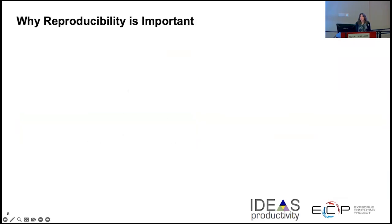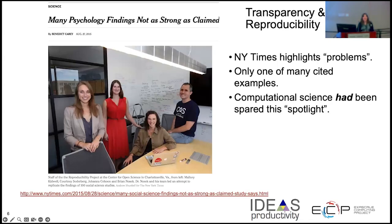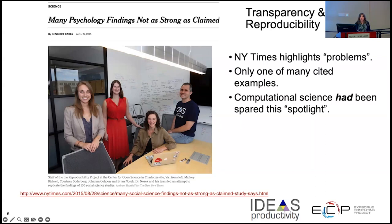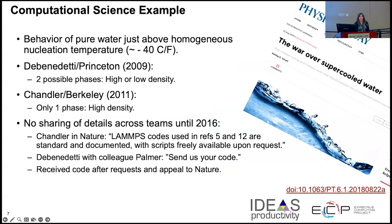So why is this important? Most of you probably know why you'd want to reproduce results. Here's an example where psychology findings were not as strong as claimed — highlighted by the New York Times — and it makes people doubt your work. Computational science had kind of been spared the spotlight, but David showed a couple of examples of catastrophic things that happened.